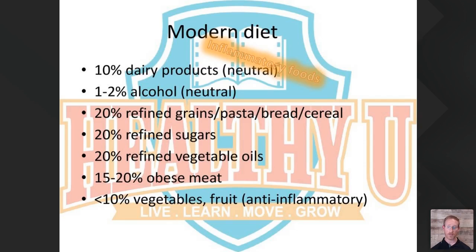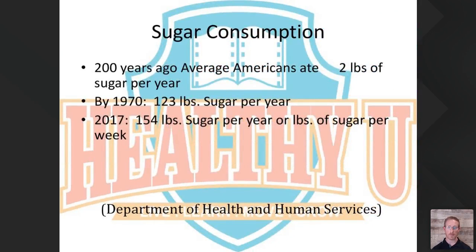Unfortunately, only about 10% of the average family's diet is vegetables and fruits, which are highly anti-inflammatory. Consider this: 200 years ago, Americans ate about 2 pounds of sugar per year. By 1970, that was up to 123 pounds per year. As of 2017, it's 154 pounds of sugar per year — per the Department of Health and Human Services. These are massive contributing factors to why so many of our loved ones are becoming sick. But it's a modifiable factor. In the next modules, we'll lay out a framework for making changes, bringing down inflammation, and preventing these diseases.